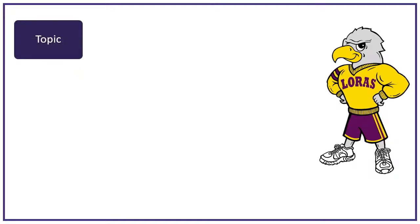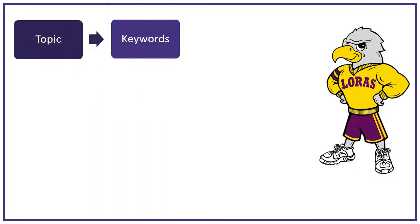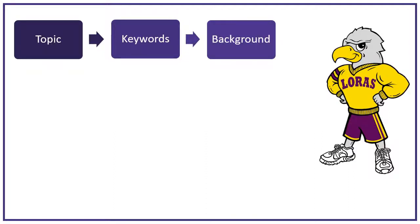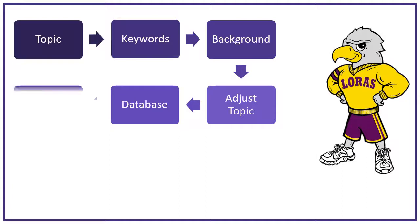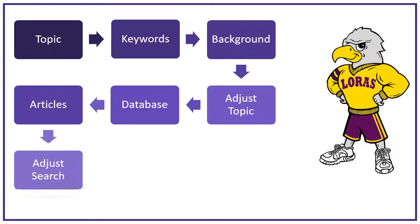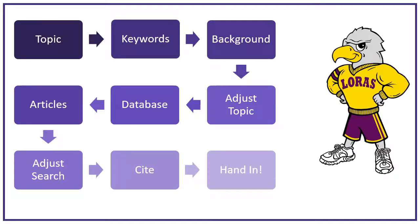The steps are: come up with a topic, brainstorm keywords, do some preliminary research, adjust your topic and come up with more keywords, find a database, search for articles, adjust your search to find better articles, cite your articles, and hand in your paper.